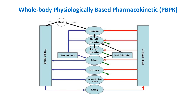Whole body physiologically based pharmacokinetic modeling is a detailed approach to pharmacokinetics that represents the body using multiple interconnected compartments corresponding to actual physiological structures such as organs and tissues. These models use physiological parameters like blood flow rates, tissue volumes, and organ-specific enzyme activities, often derived from anatomical and physiological data.